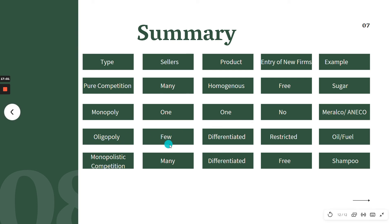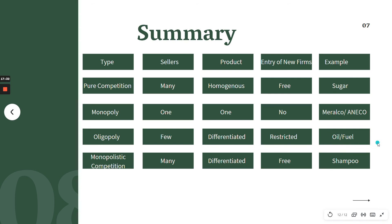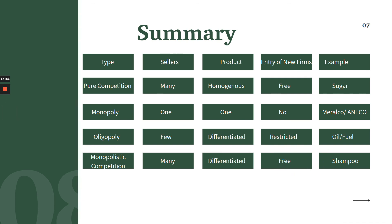For oligopoly: there are only a few sellers, their products are differentiated — similar but with a slight twist to make them different — and entry of new firms is restricted. It is difficult to enter this market. Examples include Netflix, Hulu, Amazon, Coca-Cola and Pepsi, and oil and fuel companies. For monopolistic competition: there are many sellers, products are also differentiated, and entry is free — you can compete anytime. Examples include shampoo, bath soap, and hand soap.